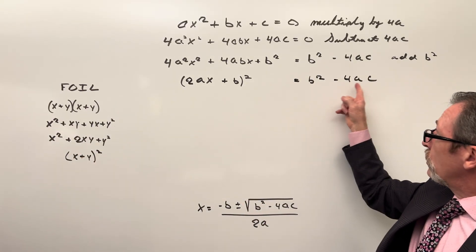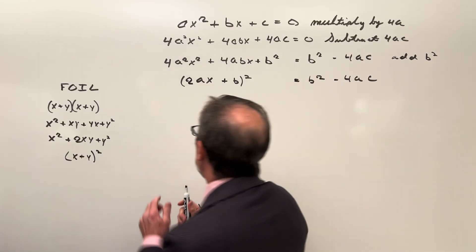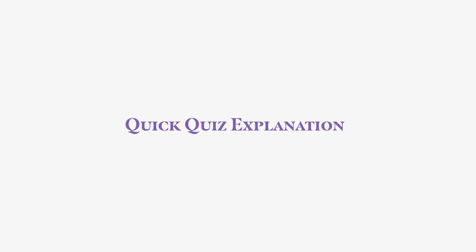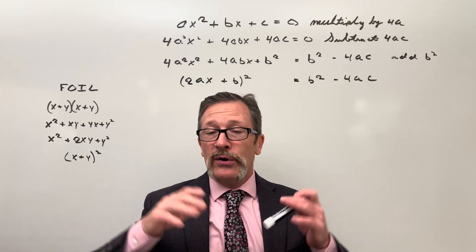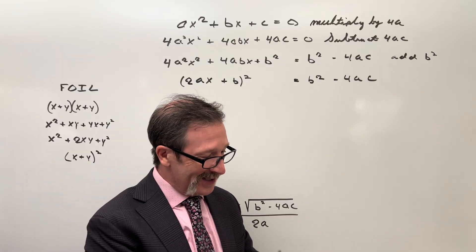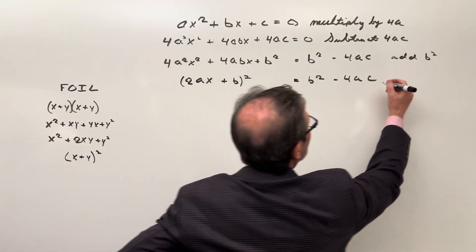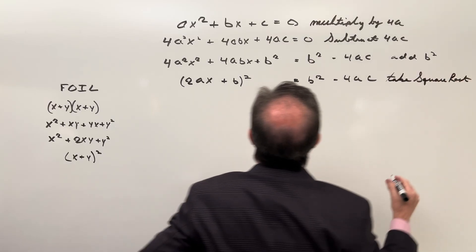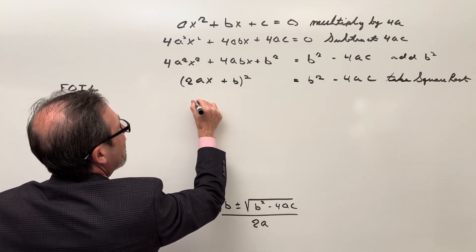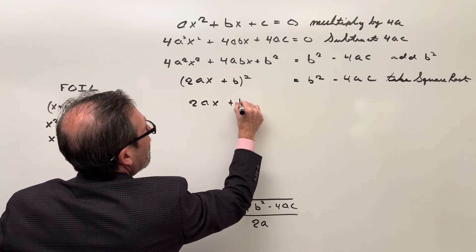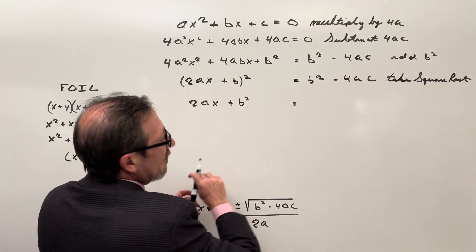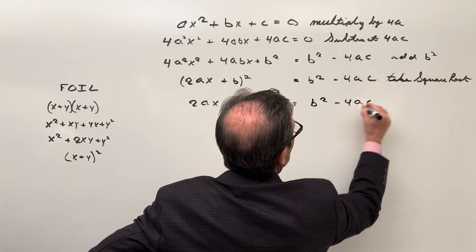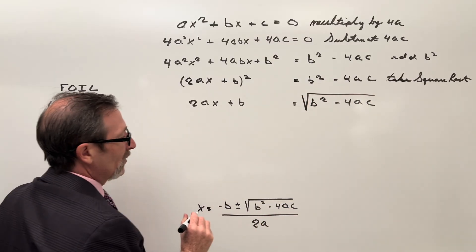They can see that the left side is squared, so they'll take the square root of both sides. Try your best not to interfere — give them a few minutes to grind through this. Taking the square root of both sides, we end up with 2ax + b on the left, equals the square root of b² minus 4ac on the right.